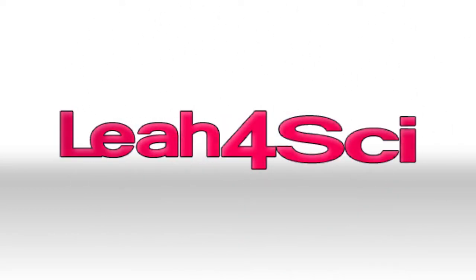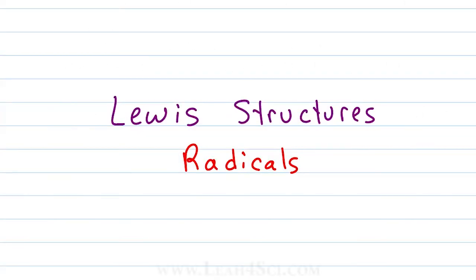Leah here from leah4sci.com and in this video we're going to look at Lewis structures specifically for radicals. As a reminder, most of organic chemistry is going to feature an electron pair. This means the bond between two atoms is a pair of electrons or a lone pair of electrons is another pair of electrons.